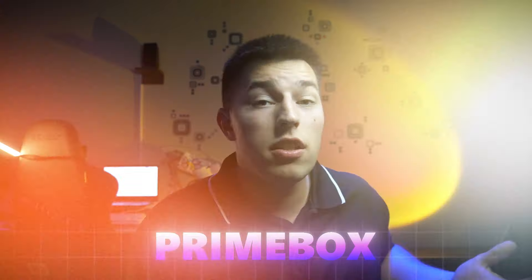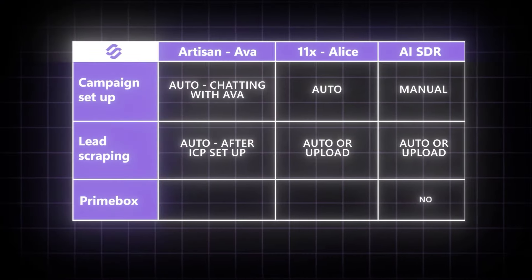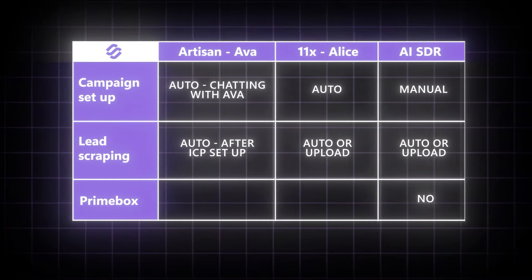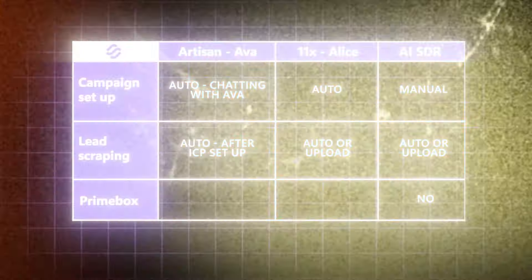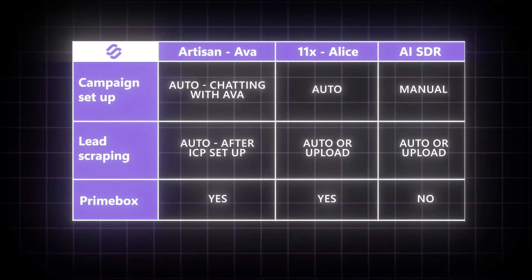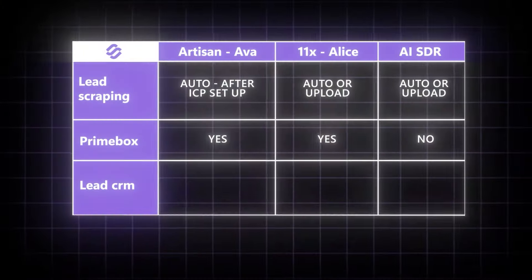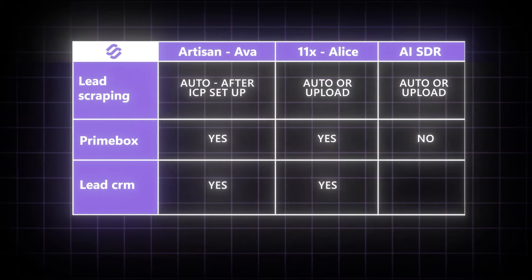Unfortunately, AI SDR doesn't seem to have a prime box where you could view all of the replies you get from all of the mailboxes you've connected. Artisan and 11X do have a prime box, so you can see all of the replies without logging into each mailbox separately. All three apps have what they call lead CRMs, where you can see each lead the AI agent has scraped and the information gathered about the lead.